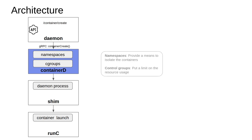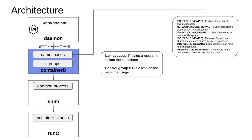Let's look into the details of namespaces and control groups. Control groups put a limit on resource usage and namespaces provide a means to isolate the containers. There are different namespaces available within the Linux ecosystem. The first namespace is the PID namespace, and what it essentially means is each container will have its own process tree.